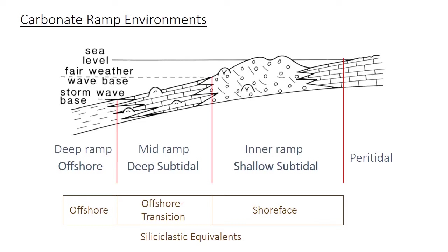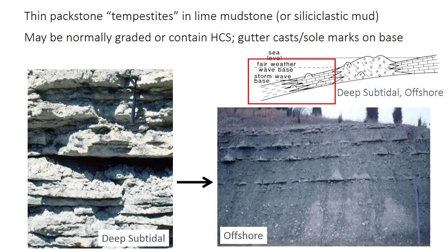Starting in the deepest water environments and working up to the peritidal side: the deeper water environments on carbonate ramps have pretty similar facies to their siliciclastic equivalents, just with limestones instead of sandstones and shales. There are thin, coarser-grained storm beds, or tempestites, possibly with HCS or normal grading, gutter casts, etc., interspersed with finer-grained sediments like lime mudstone or even siliciclastic mud.